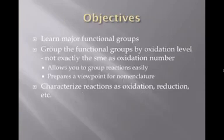And so throughout the general sophomore organic course, you're going to go through the functional group chemistry and examine the reactions of that group that lead to allow you to build up molecules by the considerations listed above. So the objective of this presentation is to learn the major functional groups. We're going to group these functional groups by what I call oxidation level. And I call it oxidation level because it's not exactly the same as oxidation number. This is going to allow you to group reactions easily, so we'll not only group functional groups, but we'll be grouping types of reaction. And it's also going to give you a viewpoint that's going to help in nomenclature. Finally, we'll want to be able to characterize reactions as oxidation, reduction, or neither.